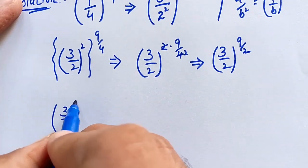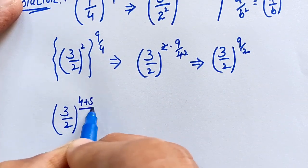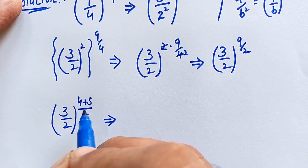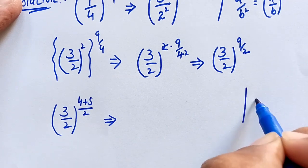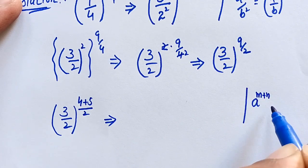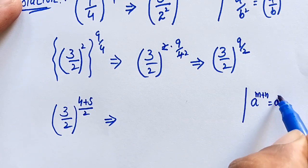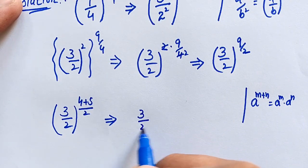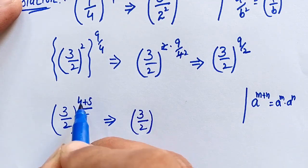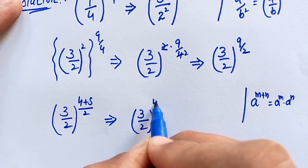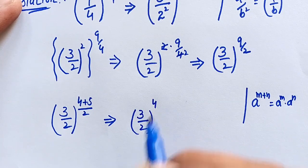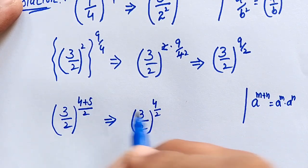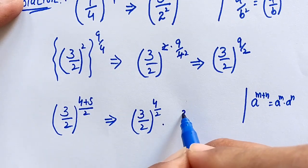Now 9 over 2 can be written as 4 over 2 plus 5 over 2. This is in the form of a^(m+n), which equals a^m times a^n. So this becomes (3/2)^(4/2) times (3/2)^(5/2).